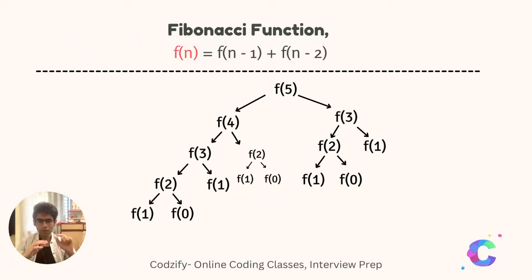In a tree-like structure, you can visualize the Fibonacci sequence like this. At the top we have f of five, then f of five will return f of four and f of three, which came from n minus one and n minus two.